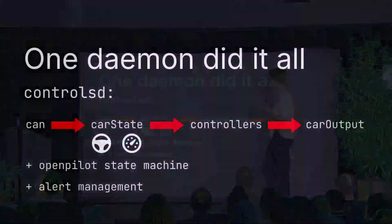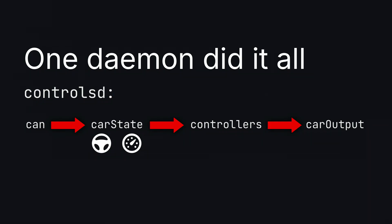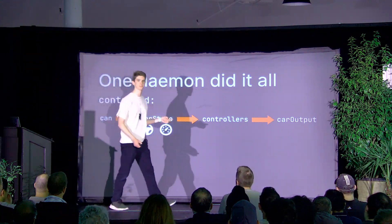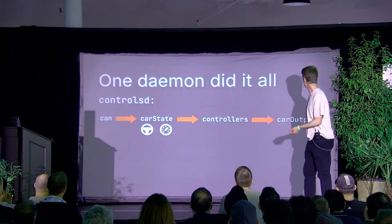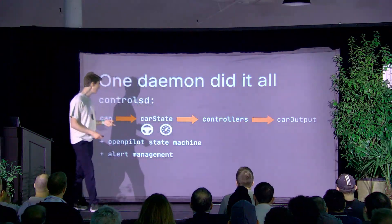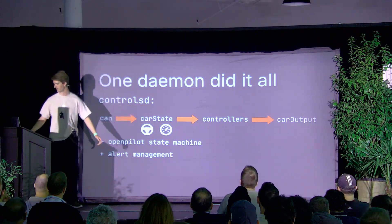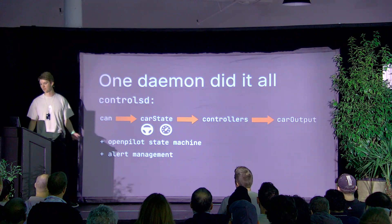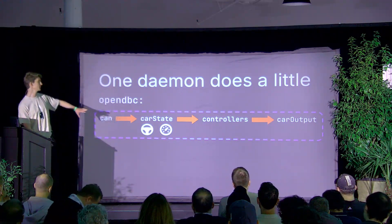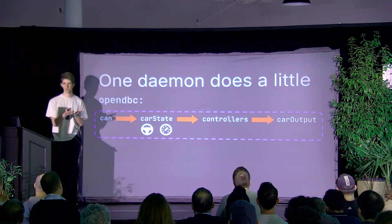To give you some context: last year we had a daemon called controlsd, which pretty much does what you'd expect. It takes in CAN data from the car, runs it through the car interface suite — which tells you the steering angle, gas, and brakes — runs it through some controllers to decide if it should turn left or right or accelerate, and outputs it back to the car. However, controlsd also did a bunch of other stuff, like running the state machine — if you're pressing the brake, disengage; if the model is uncertain; if we're doing a lane change. It's just doing a lot of stuff. This is pretty complex — keeping the whole file in your head is impossible. So we took the car stuff out of openpilot and moved it to a new project called opendbc, where the car CAN DBC messages already existed, so it's all in one place.